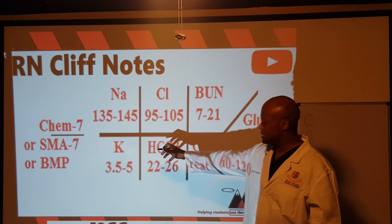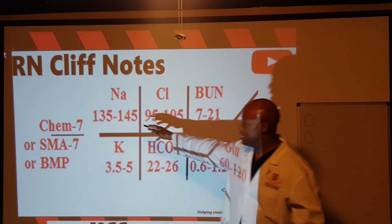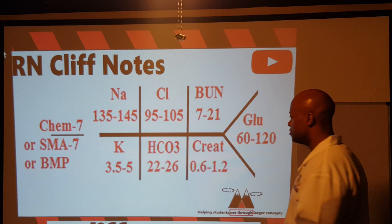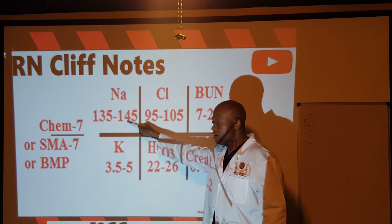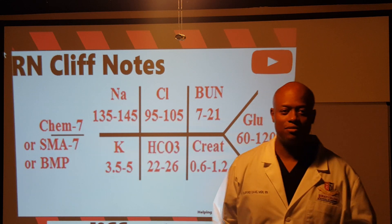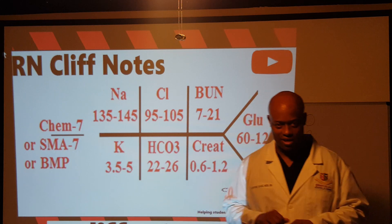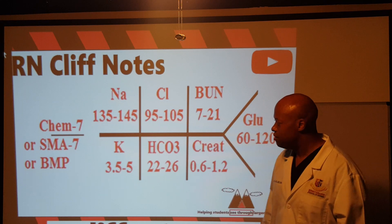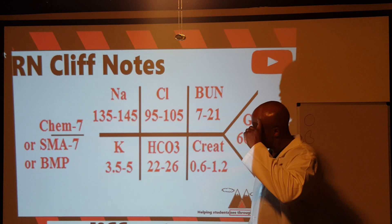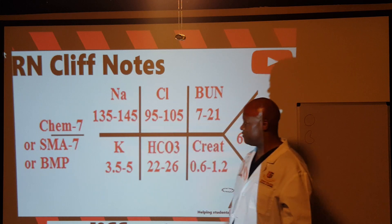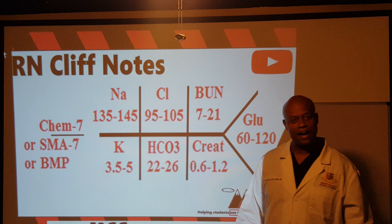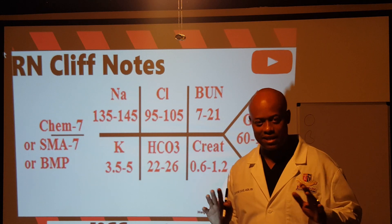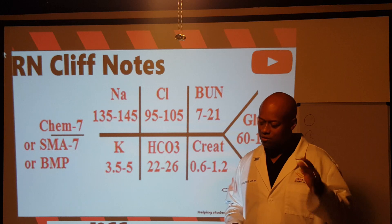Potassium has a positive charge, so it shows up in the cation column. Potassium's level is 3.5 to 5 — make sure you remember these; they show up on a lot of tests in nursing and medical school. Sodium is 135 to 145, and potassium is 3.5 to 5. Note it's 3.5 to 5, not 5.0 — we avoid trailing zeros so people don't mistake it for 50.